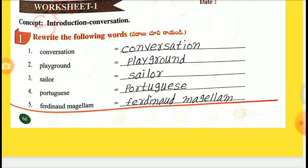Worksheet 1. Concept: Introduction. Relate the following words — Conversation, Playground, Sailor.